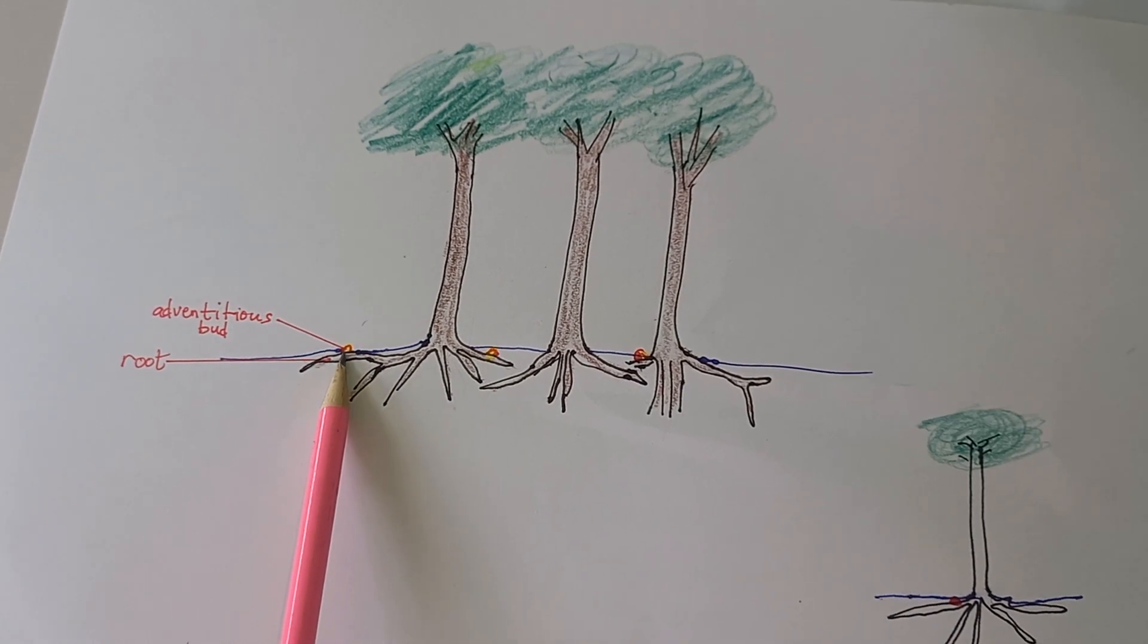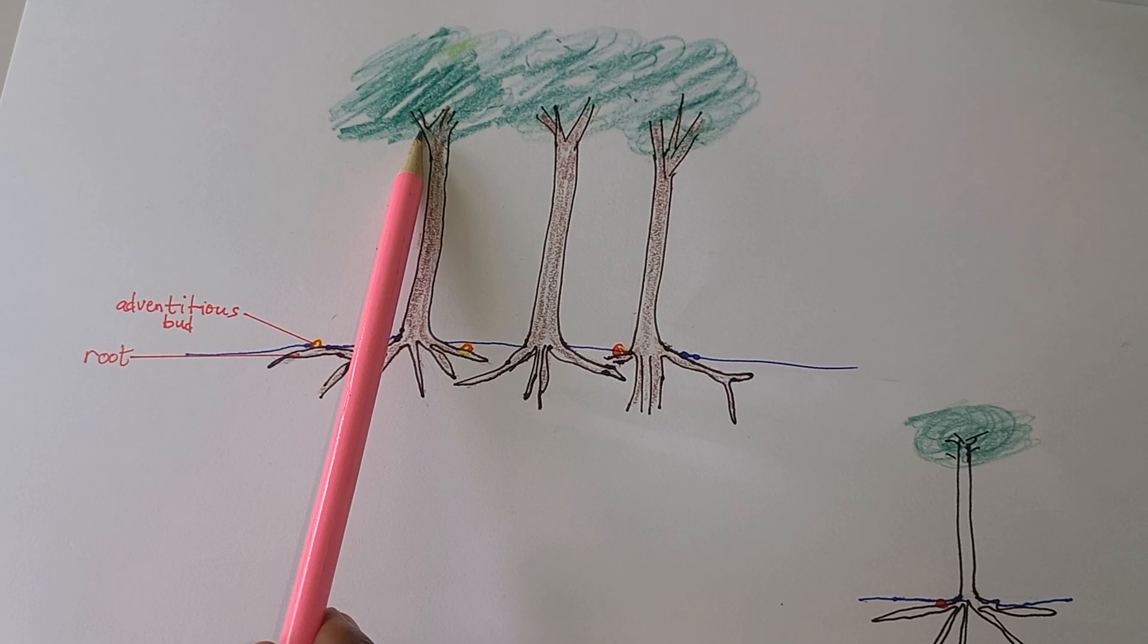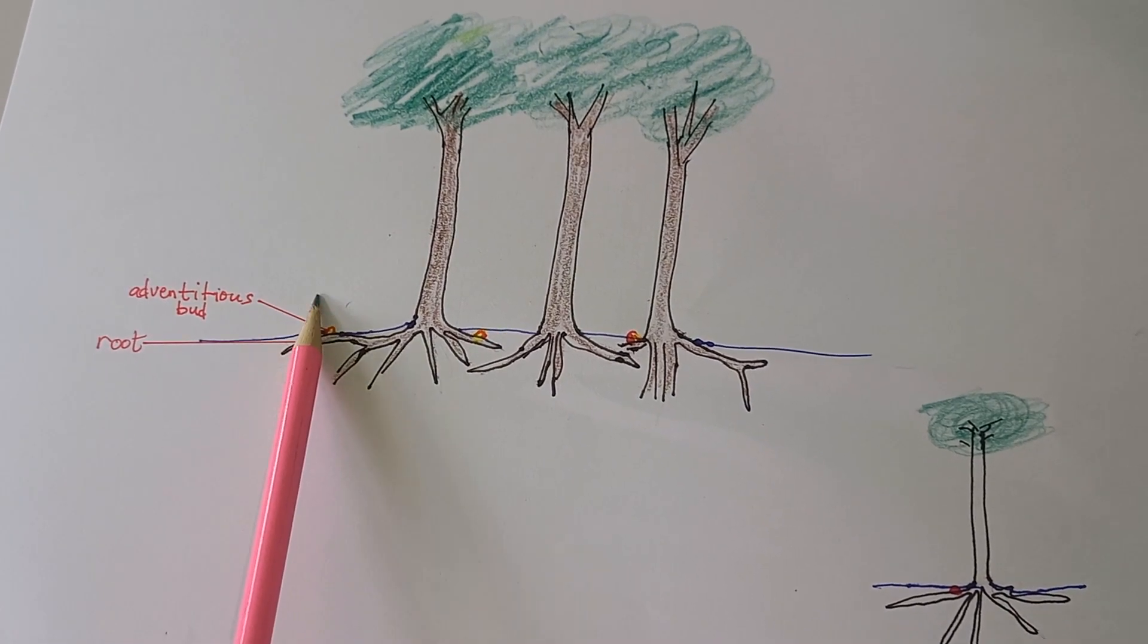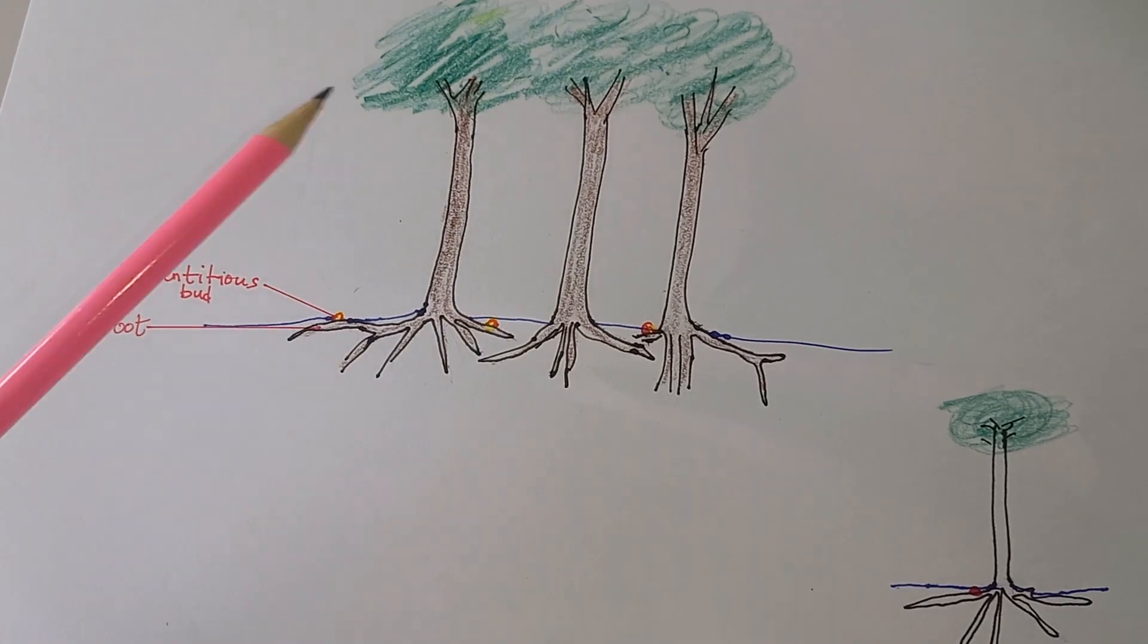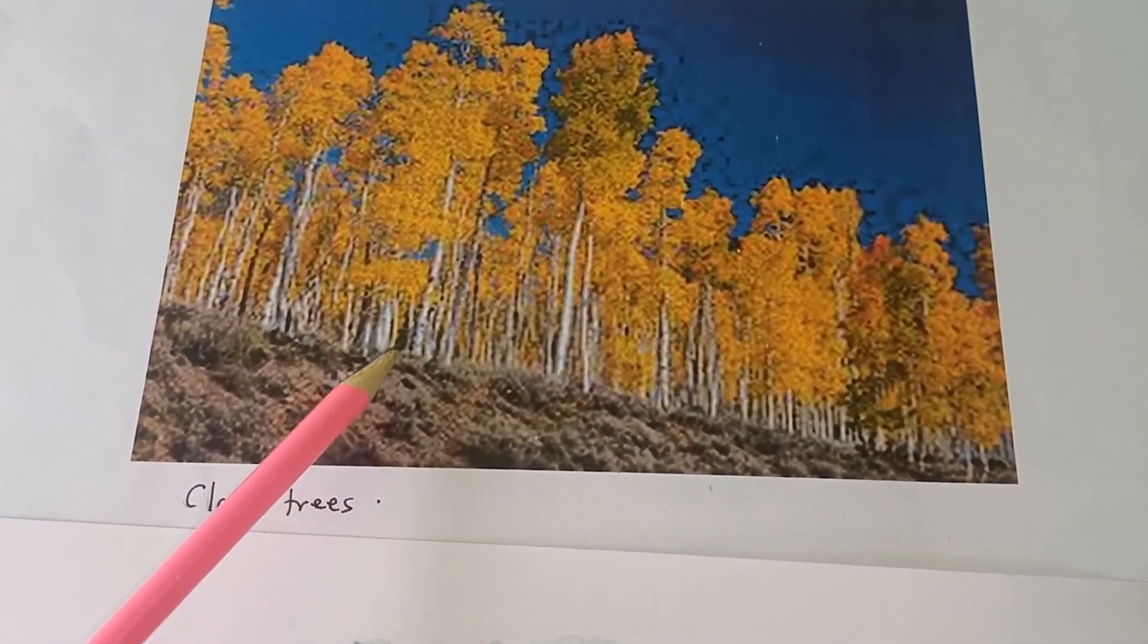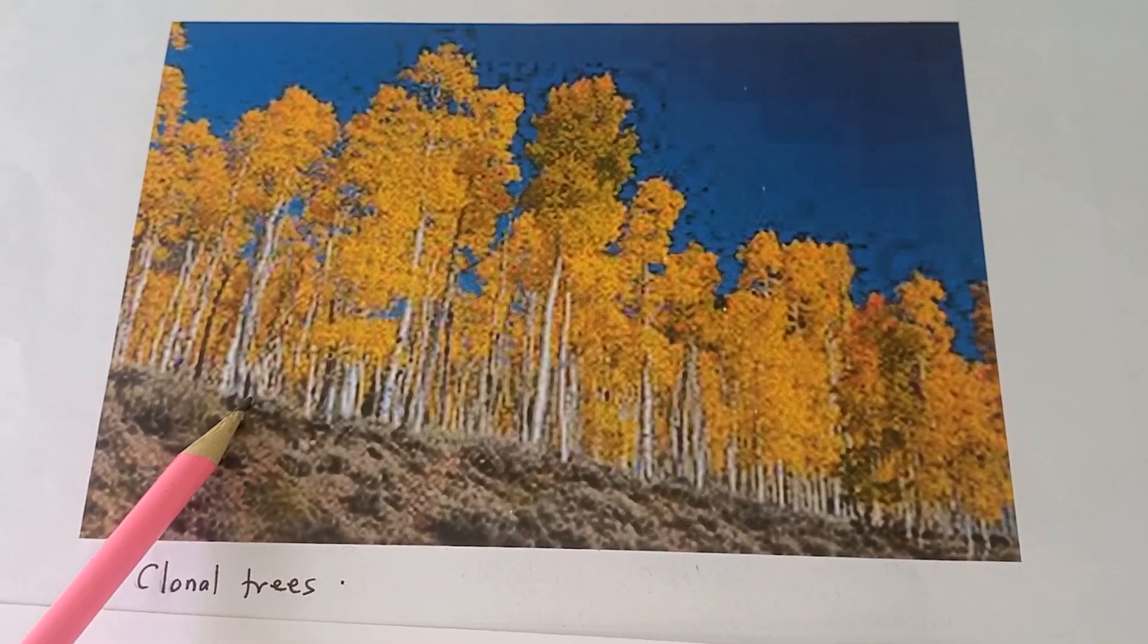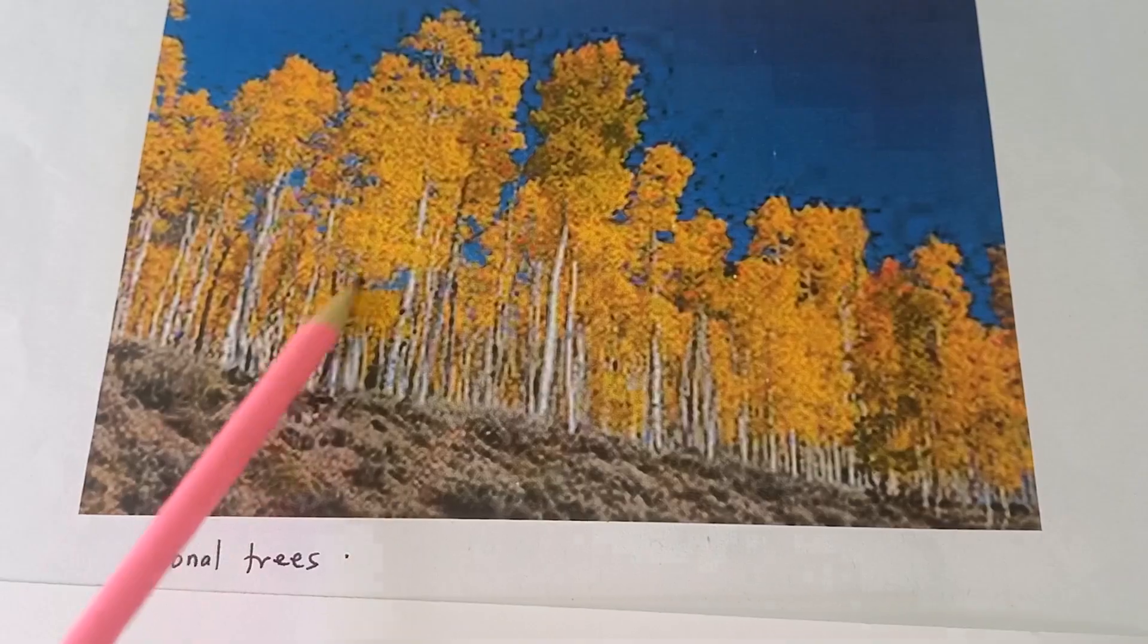There can be an adventitious bud on a root. There can also be an adventitious bud on a shoot. And this adventitious bud is what will produce a new tree. That is what happens in the clonal trees that have lived for years. Adventitious bud will produce another tree.